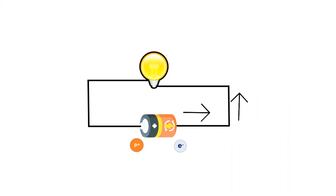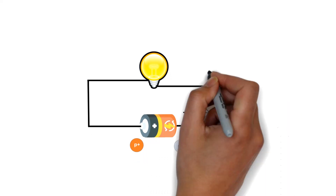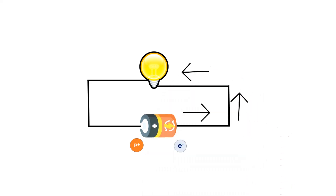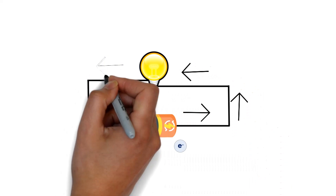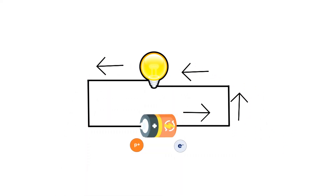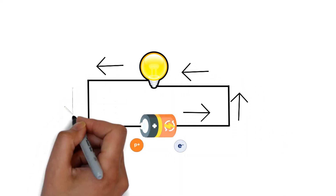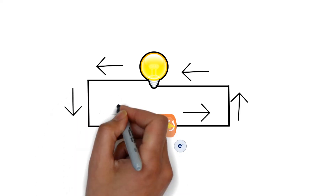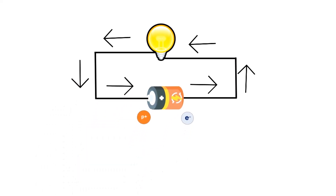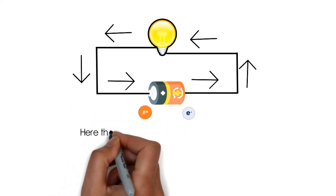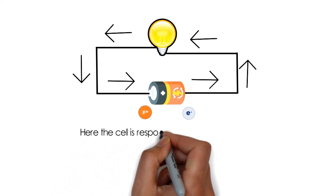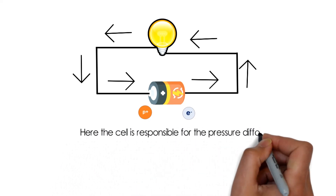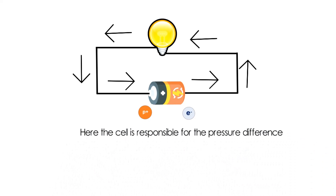As you can see in the diagram, the arrow is moving from negative to positive. That is because the energy level of electrons is more than that of protons. The cell is responsible for the pressure difference — or potential difference — between the protons and the electrons.